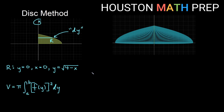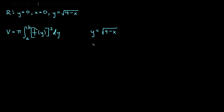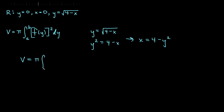We need to solve y = √(4 − x) for x. Squaring both sides: y² = 4 − x. Rearranging: x = 4 − y². That is our formula for the radius of each disk — the horizontal distance from the y-axis to the curve. So the volume becomes V = π ∫ from a to b of (4 − y²)² dy.